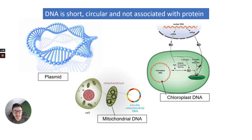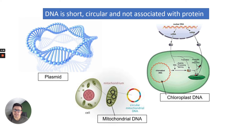However, in eukaryotes you do have mitochondria and chloroplasts, and you need to know that there is mitochondrial DNA and chloroplast DNA. It's very similar to prokaryotes — so the DNA is short, circular and not associated with protein.